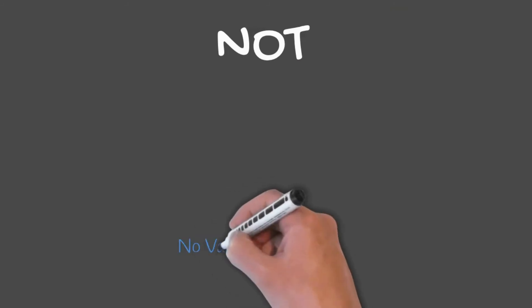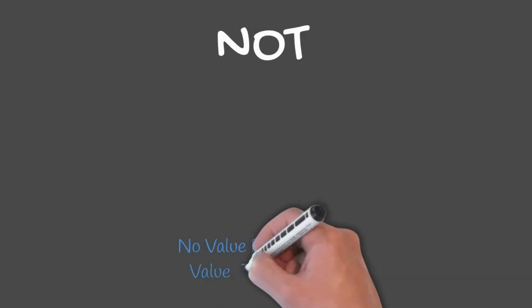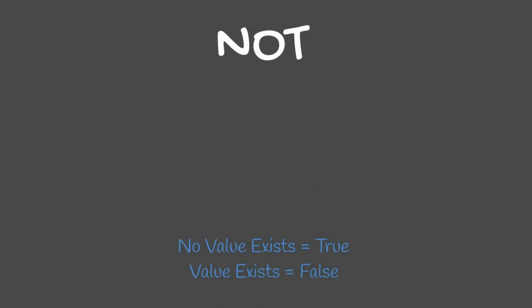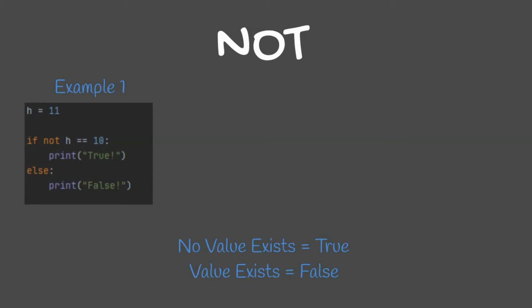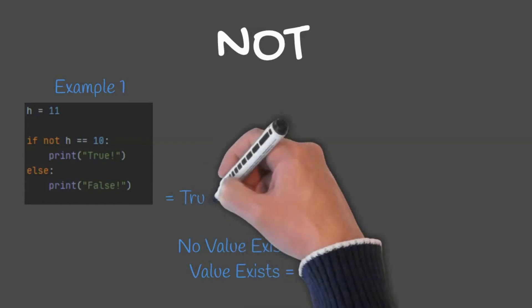NOT checks that no value exists in a statement. If no value exists, the statement is true. In our example, H equals 11. If NOT H equals 10, print true, or else print false. In this example, because H equals 11 and does not equal 10, this would print true.